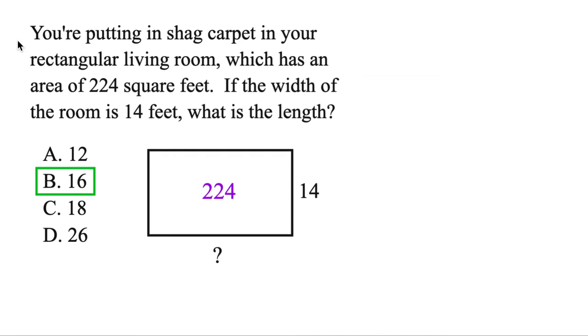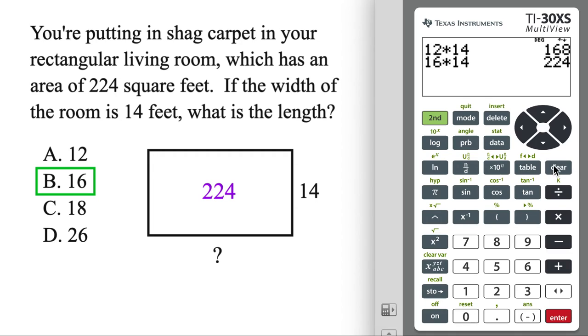Now you may be wondering, is there a way to do this without the multiple choice? Definitely. You could always start, if you know the area, with that. But you're going to work the problem backwards. We multiplied to get our answer, so in this case, if you know the area, divide. Divide by the width, that'll give us the length, 16 that way. So you got options, whichever one you prefer there.